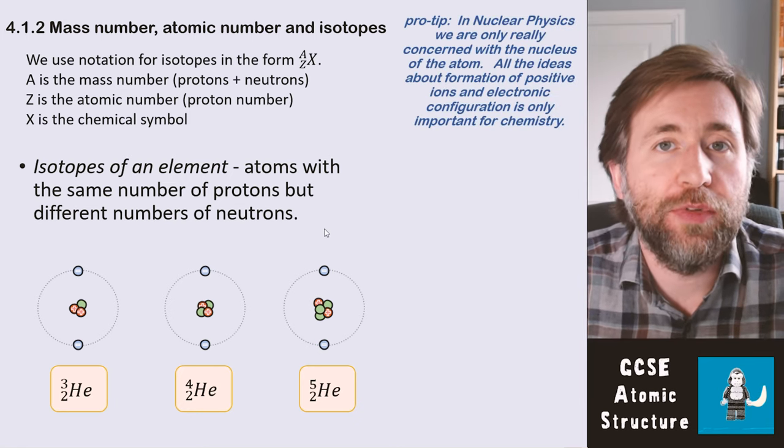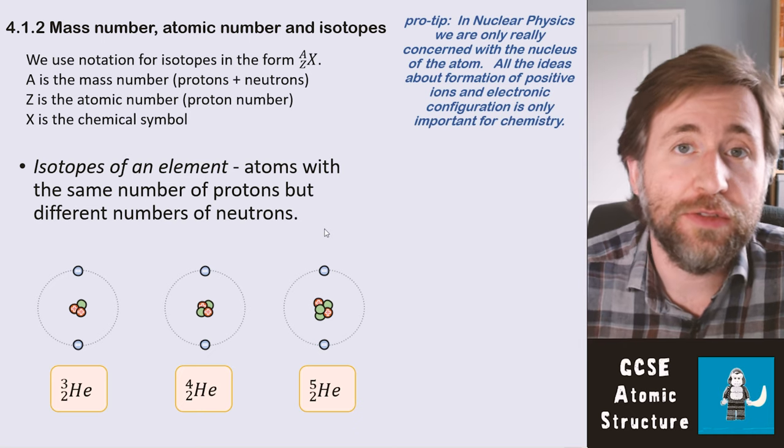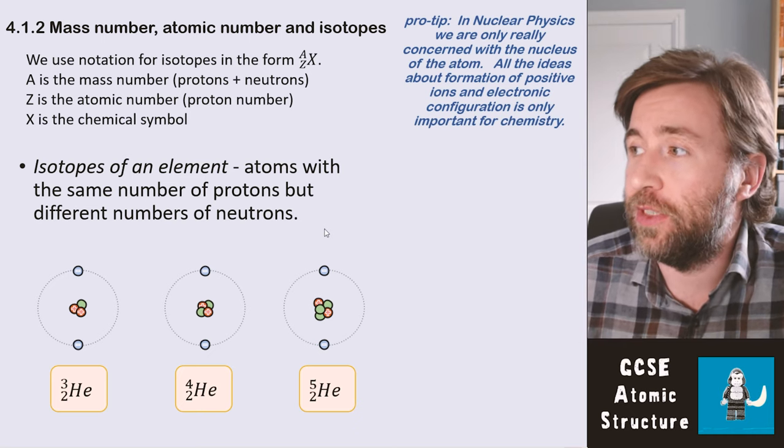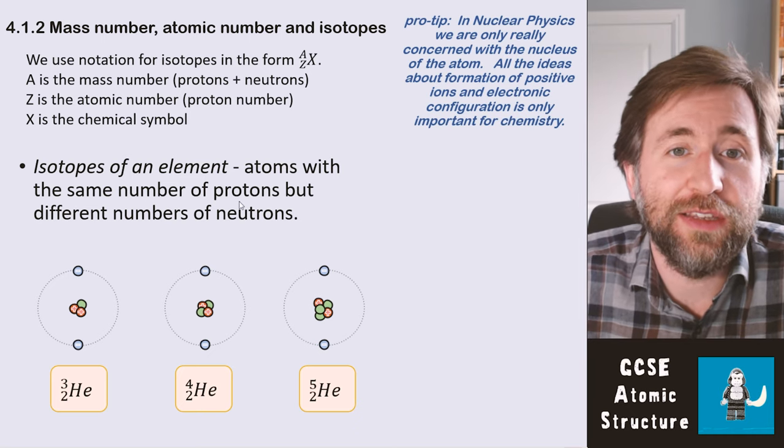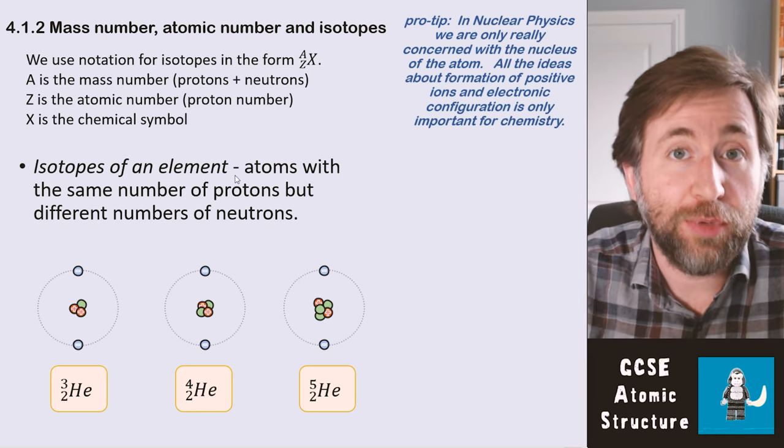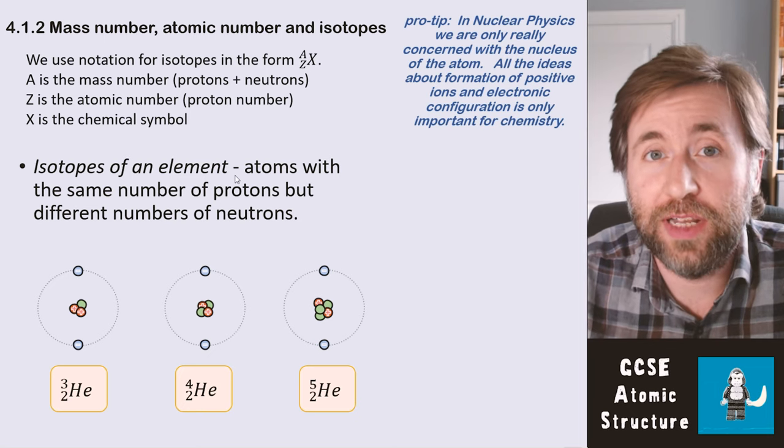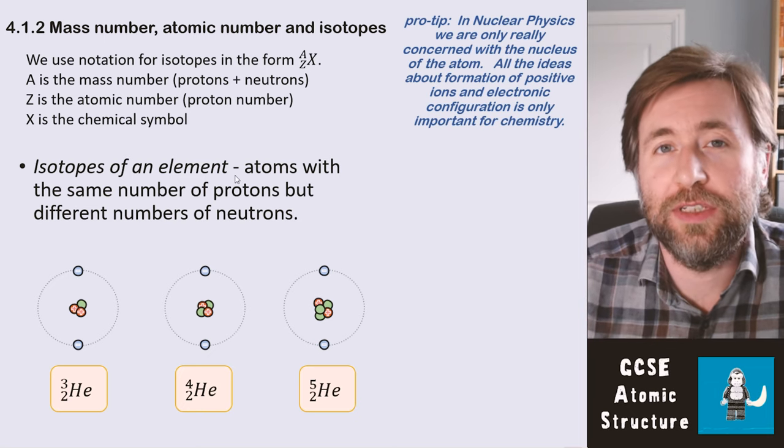I just want to make something really clear in this pro tip: in nuclear physics, we're only really concerned with the nucleus of the atom. So although in chemistry they often say that the atomic number is the number of protons and also the number of electrons, we're not too interested in that in this part.